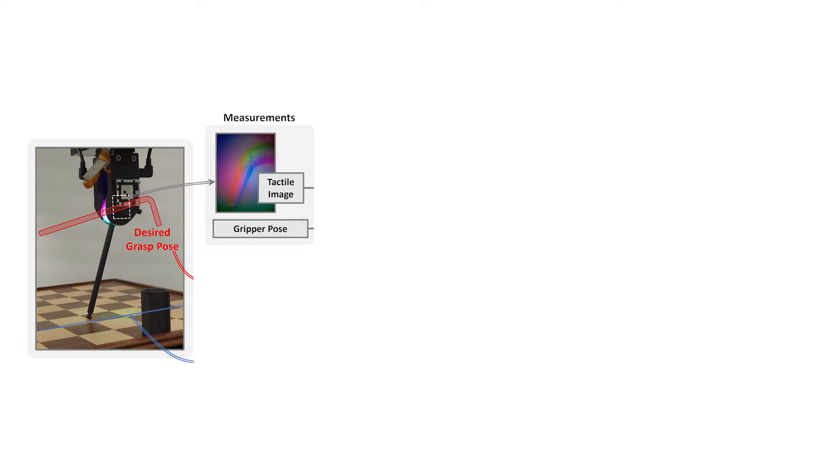Our method starts by measuring the gripper pose and a tactile image from a sensor on the gripper finger. Our method also inputs the goal configuration, approximate friction parameters, the object CAD model, and the environment orientation and height.